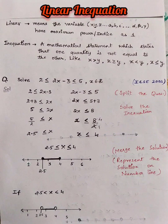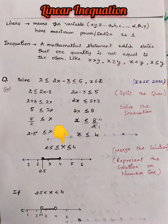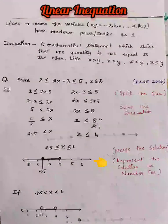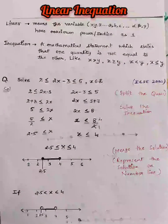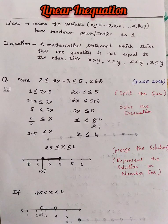Now we will merge both solutions of the inequations, which gives us x ≥ 2.5 and x ≤ 4. Let us represent the solution on a number line. We draw a number line, represent 2.5 between 2 and 3 with a dark circle since x ≥ 2.5, and on 4 we also put a dark circle since x ≤ 4. So that's our answer.